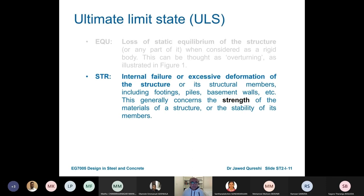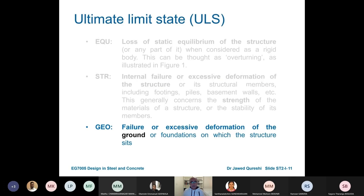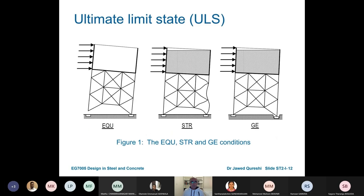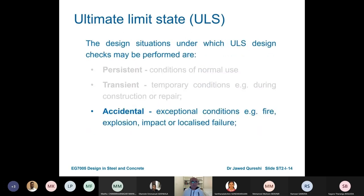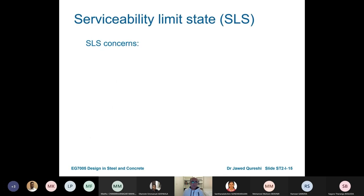In simple terms, for beams STR means moment capacity or moment resistance based on factored loads, and for columns it is compression capacity based on factored loads. We are most often concerned with STR. GEO is concerned with the ground. The limit states in order are: first, equilibrium; second, loss of strength; and third, loss of ground. Then we have FAT — that's fatigue failure, not a reference to body weight. In our case we will mainly be concerned with STR.